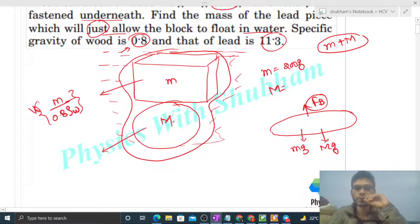So itna volume hai cube ka. And similarly you can also find out the volume of this lead. That will be mass of the lead divided by density of the lead, that is 11.3 into density of water. Because iska specific gravity 11.3 hai. So jo volume is system ka water ke andar submerged hai, that is small m/(0.8ρ_w) plus capital M/(11.3ρ_w). Itna volume submerged hai into density of water into g, this is your buoyance force. That should be equal to small mg plus capital Mg. Weight ke barabar hoga.